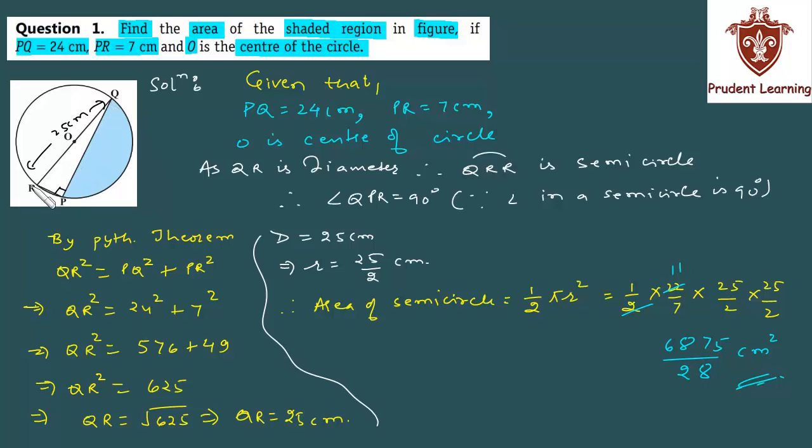And now we just need to find the area of triangle QPR. After that, we just need to subtract the triangle's area from the semicircle's area. Now, let's find the triangle's area. We have area of triangle QPR as, you can find the triangle's area by the formula half of base into height. The base you have is PR, into the height or altitude you have is PQ. Now, substituting the values, we have half of PR which is 7 into PQ which is 24.